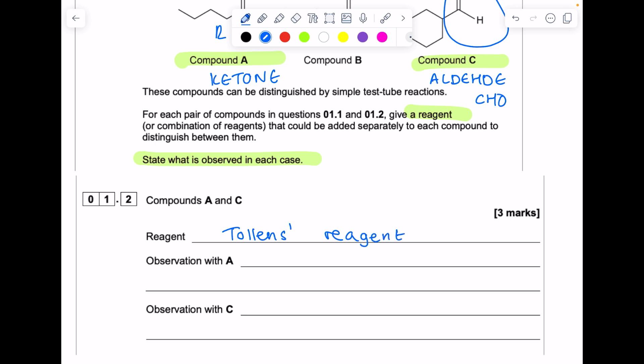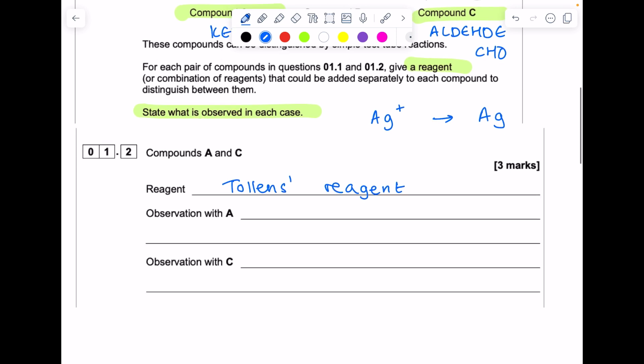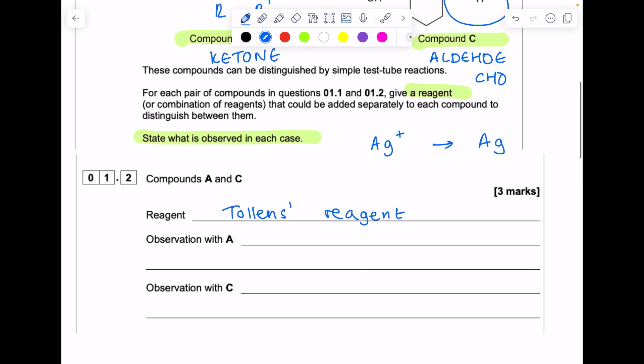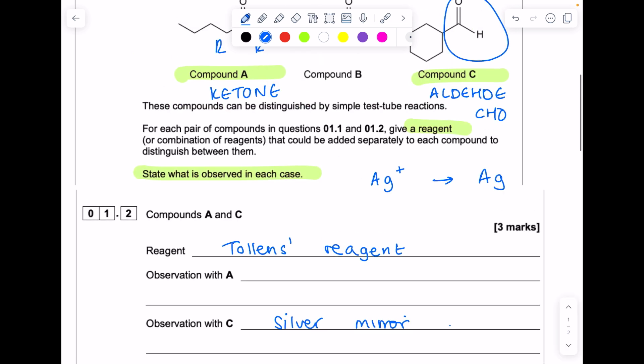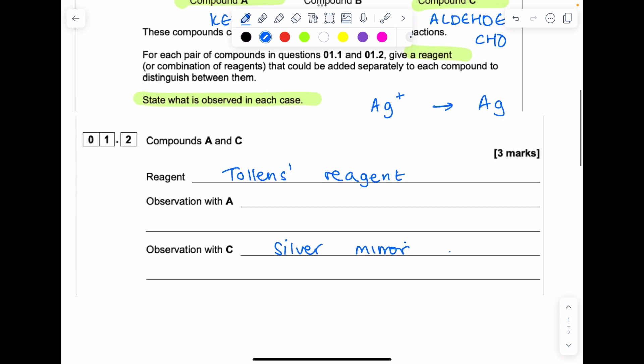Now, Tollens reagent will oxidize an aldehyde to a carboxylic acid, and because that Tollens reagent contains Ag plus ions, they will be reduced to form that metallic silver, which is what we see as a silver mirror. So with the aldehyde compound C, we'll see a silver mirror, whereas no such oxidation takes place with a ketone. So our observation with A is no reaction.